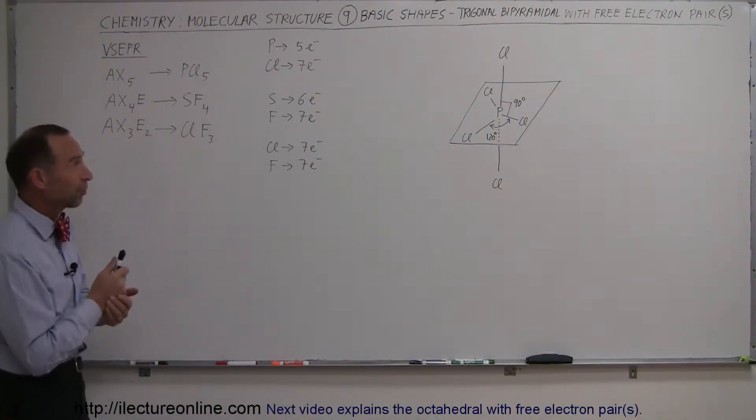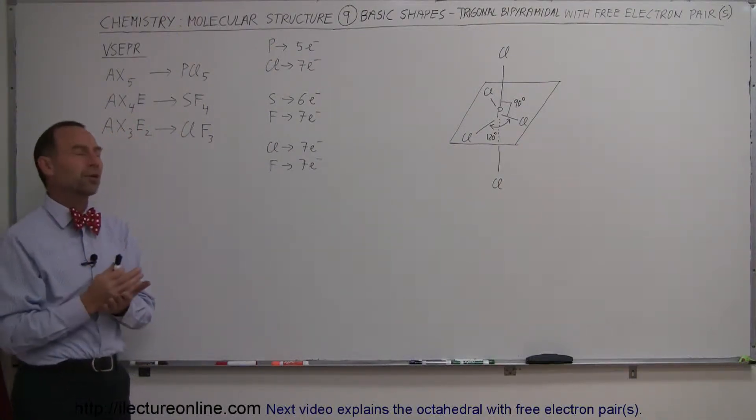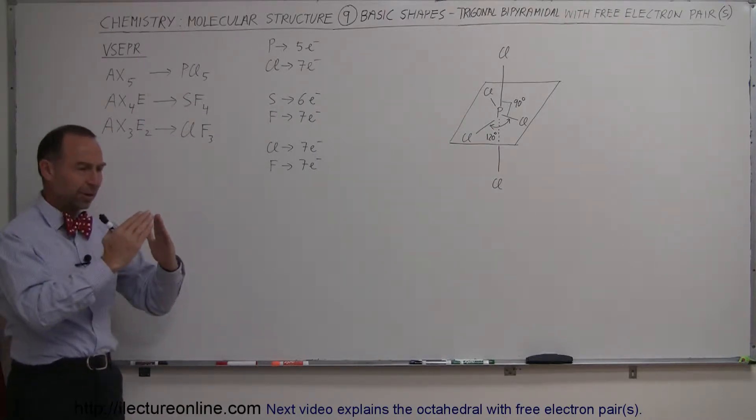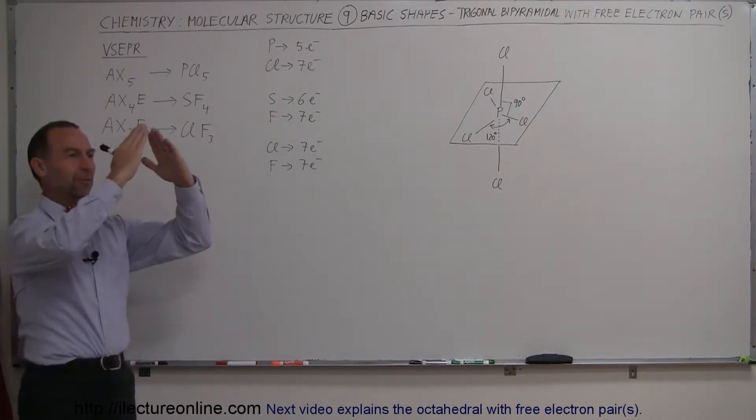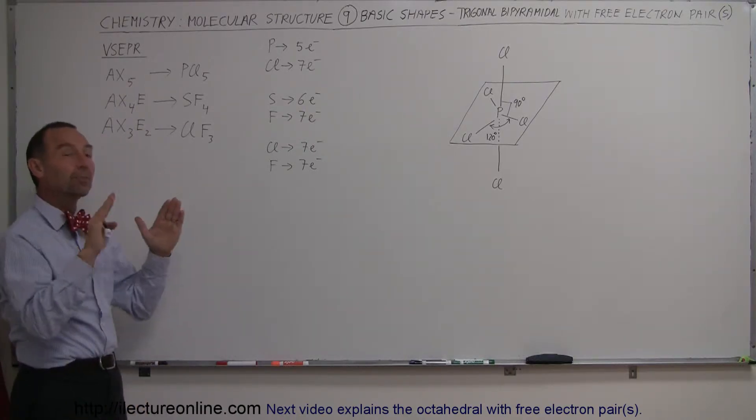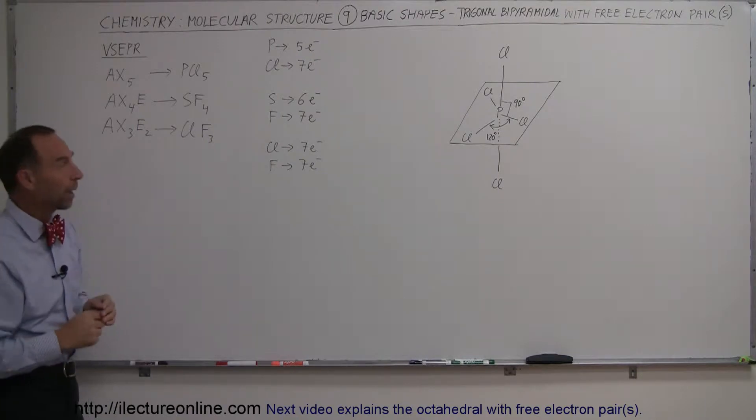And in our next basic shape we're going to talk about what we call the trigonal bipyramidal shape. Those are basically two three-sided pyramids glued base to base. So we have a pyramid sticking up and a pyramid sticking down with the two bases together. Three-sided pyramids, that's why the name trigonal bipyramidal.